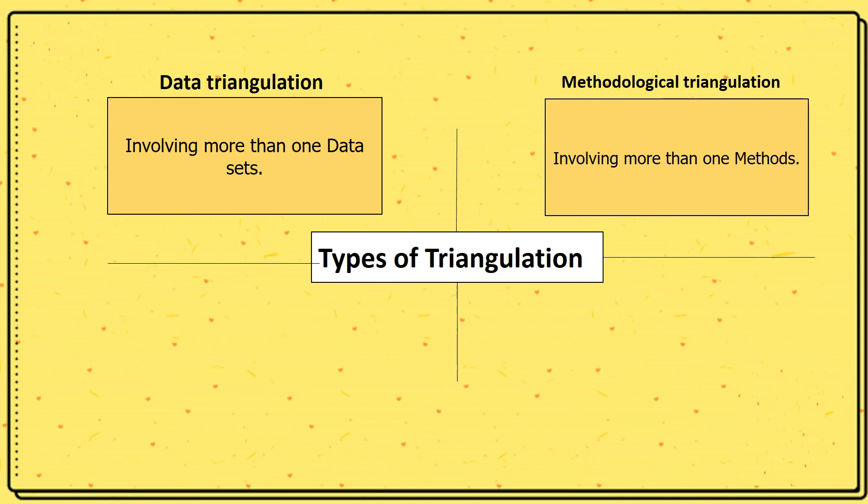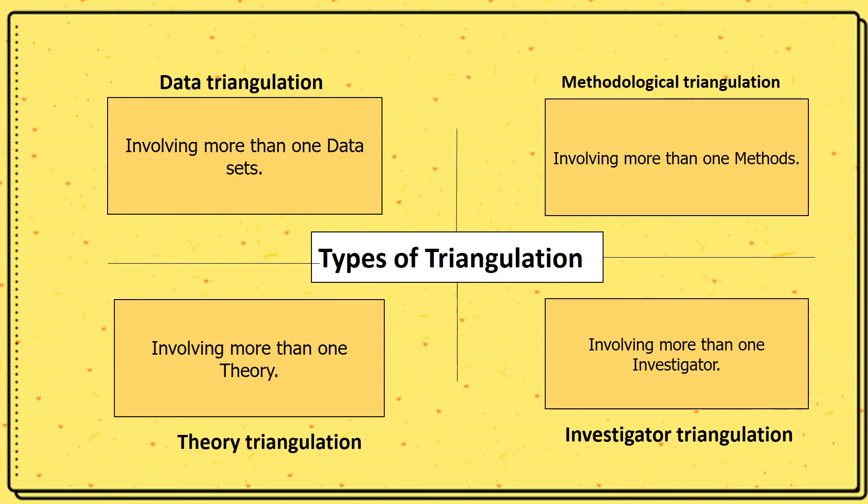The third type of triangulation is theory triangulation, which involves applying more than one theory in the research. And the last type of triangulation is investigator triangulation, that type of triangulation in which more than one investigator is involved.